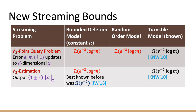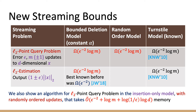I'll highlight a few new streaming lower bounds we obtain. For the L2 point query problem, we show a matching lower bound in the bounded deletion model and the random order model — previously such a bound was only known in the turnstile model. Similarly for L2 estimation. We also show an algorithm for the L2 point query problem in the insertion-only model with randomly ordered updates that uses O(1/ε² + log n) memory, whereas in the random order model it requires O(1/ε² · log n) memory.